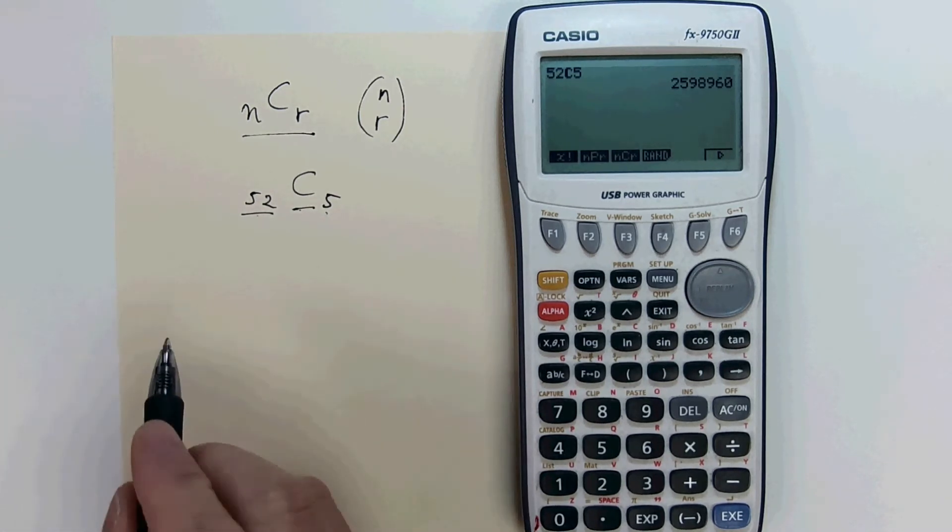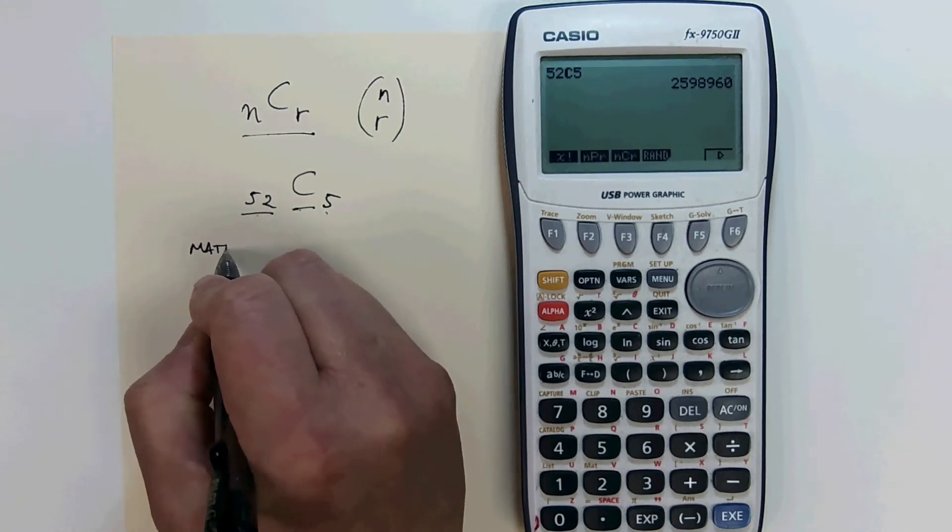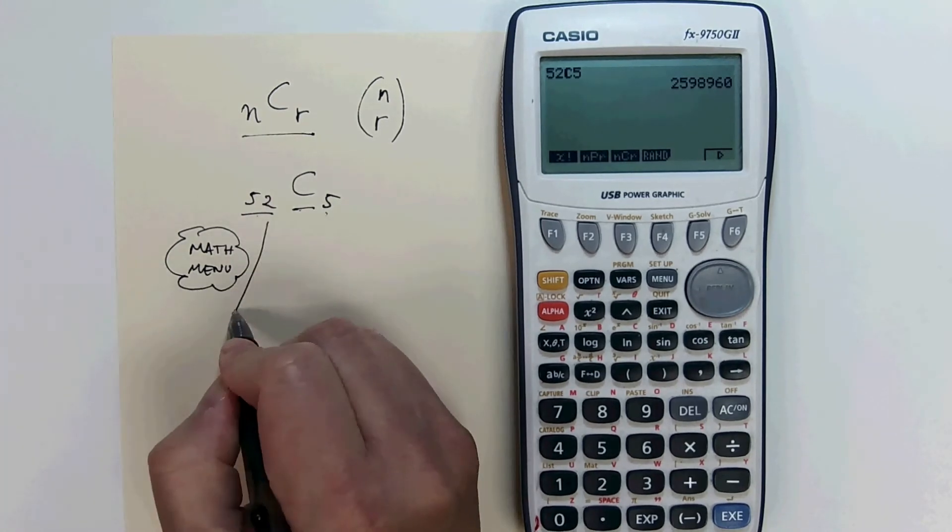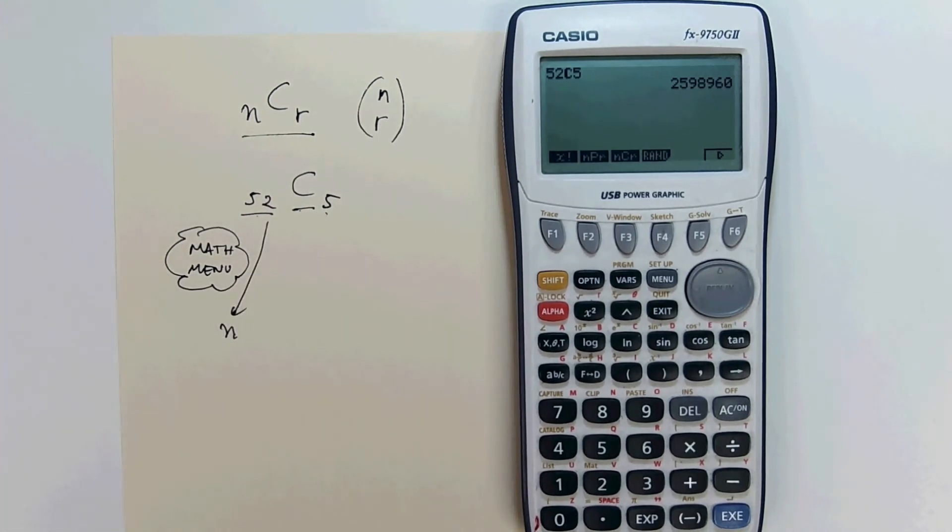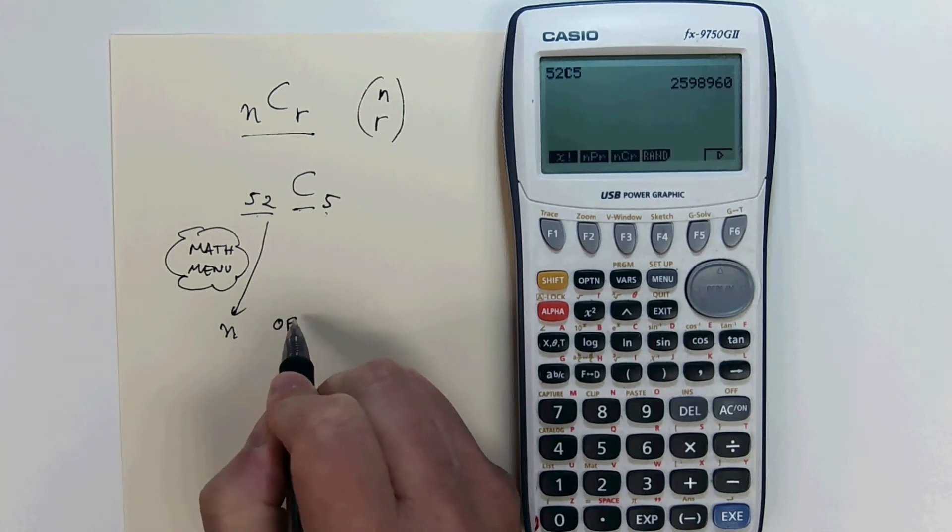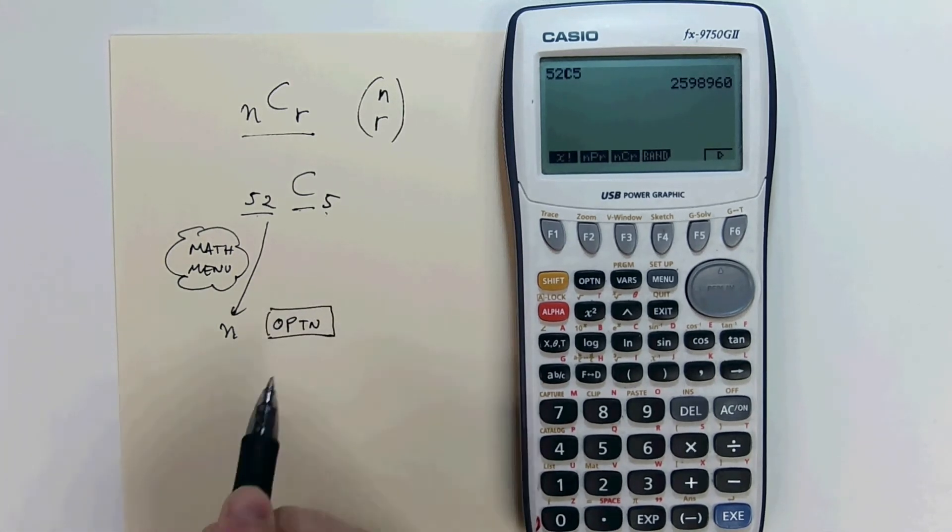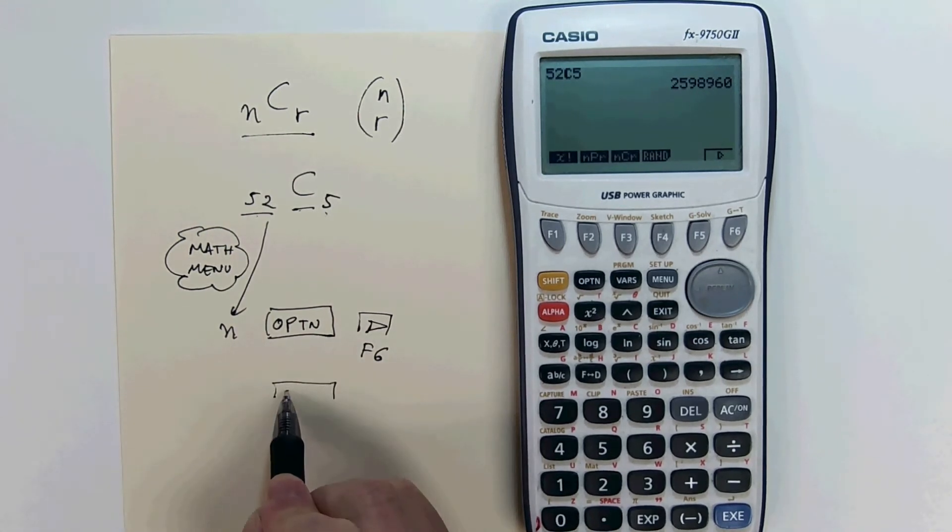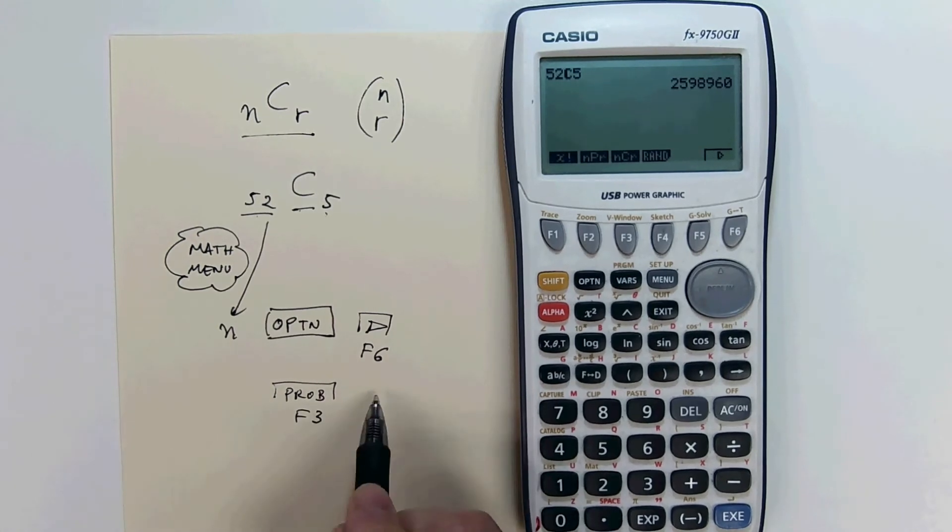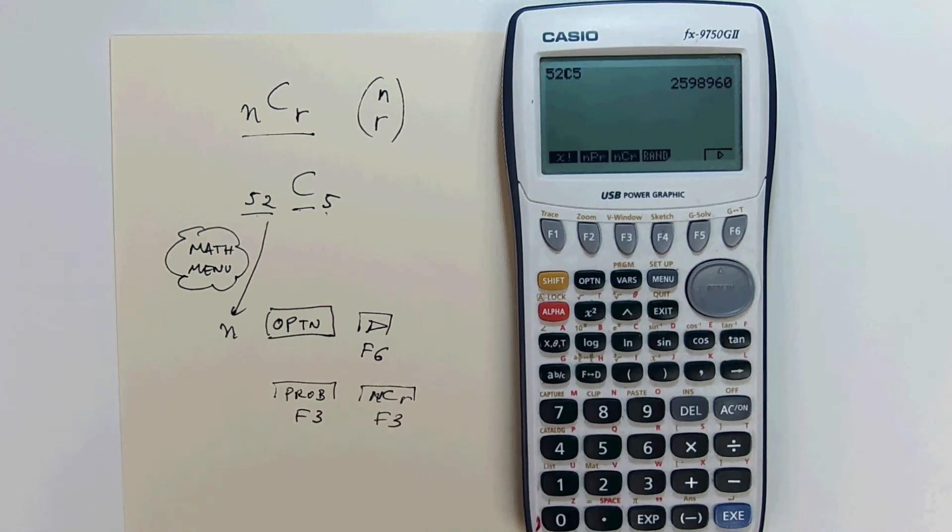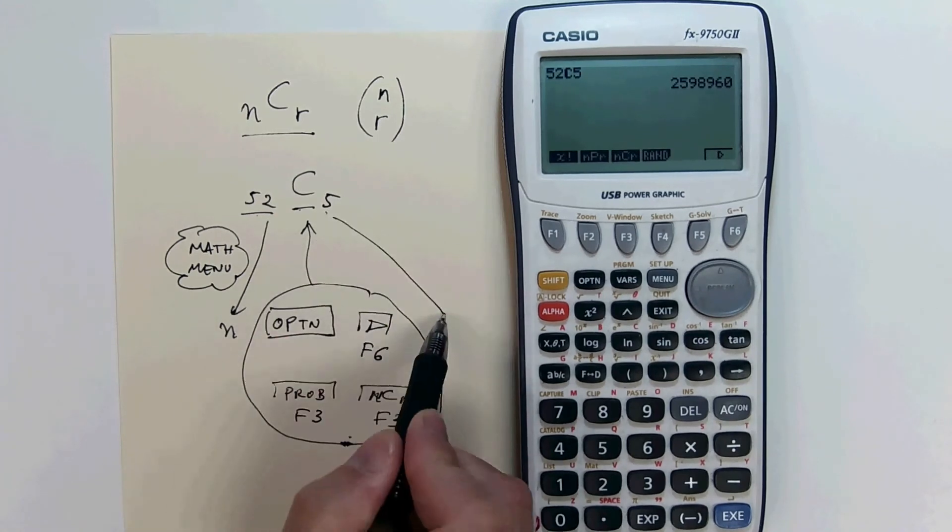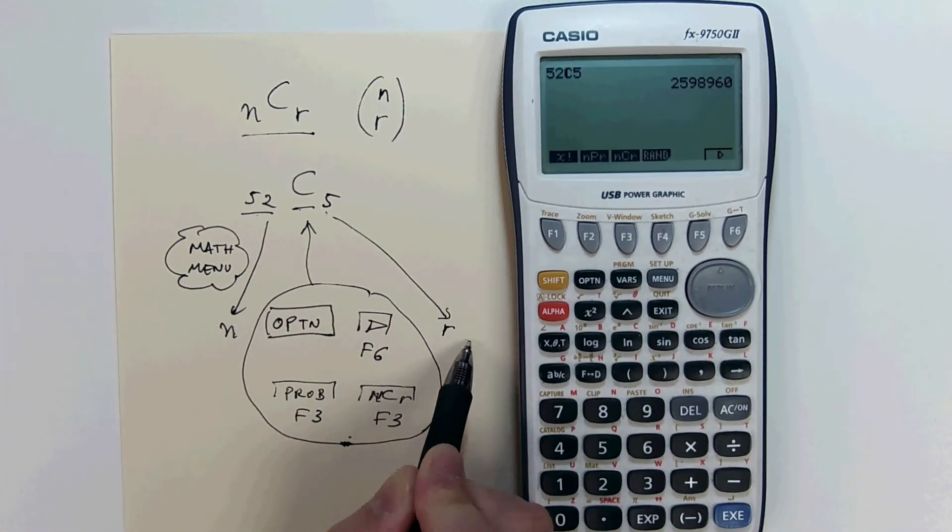Let's summarize. First, make sure you're on the math menu. Type this number in. Go through the work to get to C. Press Option. Press F6 to move on to the next list. Press F3 to select probability. Now press F3 to select NCR. All of this to get to the C. Then type in the R. Hit execute.